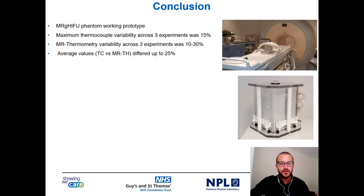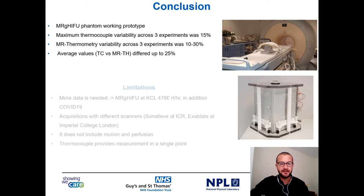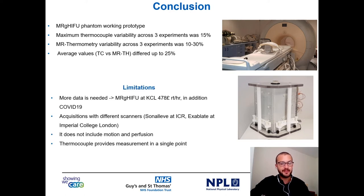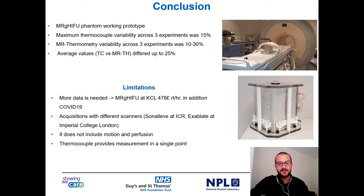In conclusion, we achieved our goal. We developed a test object which is a working prototype and allows thermal quantification in a reference material. The main limitations of the study are the number of experiments, which are just three. However, you need to deal with the clinical schedule of the machine and the cost, which is about £500 per hour. In addition, we had COVID-19 and we are a UK hospital, so the research activity was completely stopped. It would also be nice to collect and compare data with different scanners and add to the phantom motion and perfusion, which can further challenge the machine.